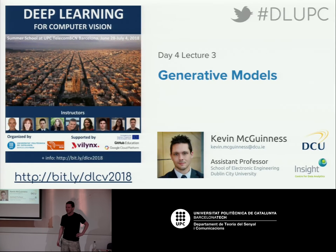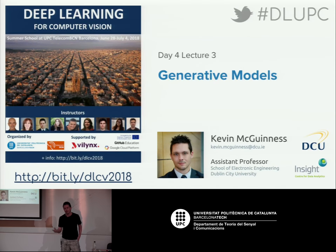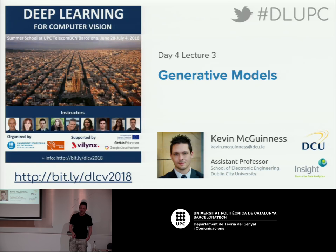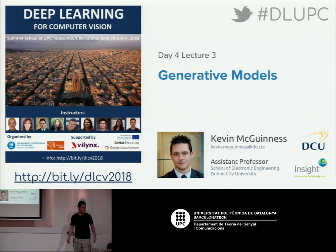I'm going to speak about generative models, focusing in particular on GANs — generative adversarial networks. There are other types of generative models, and one particularly popular one is variational autoencoders, but I don't have time to cover everything, so I'm just going to focus on GANs in this talk.